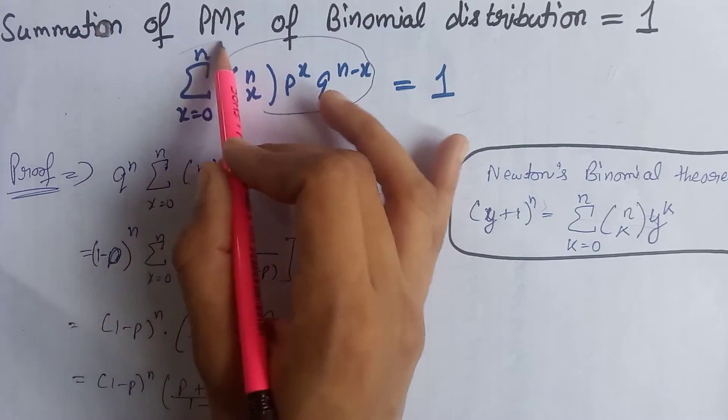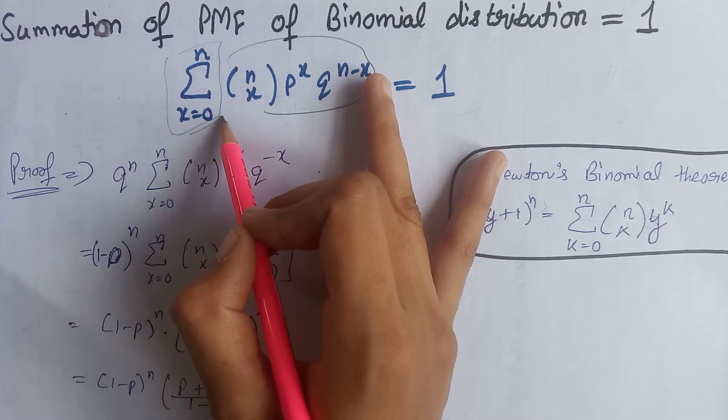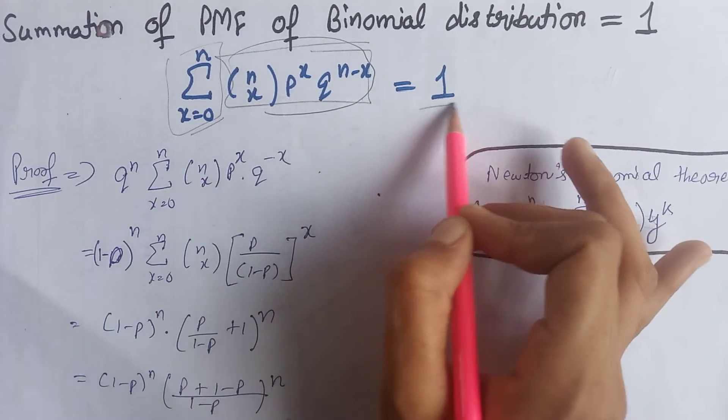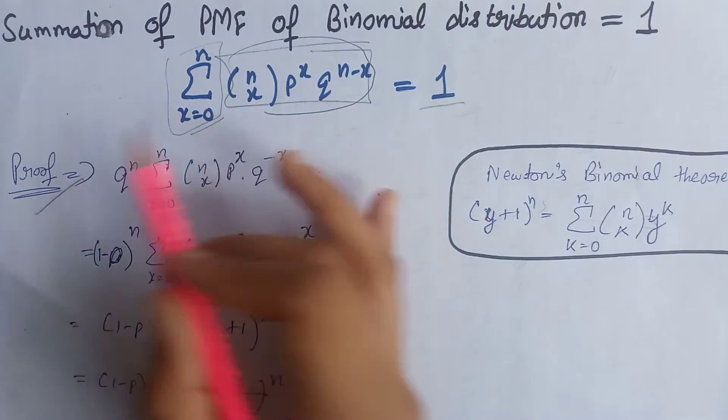Now we will prove that the summation over all values of x of the PMF of the binomial distribution is always equals to 1. So let's start the proof.